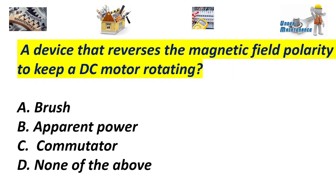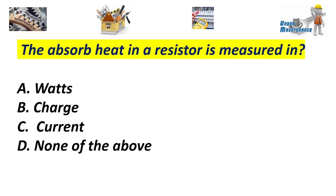A device that reverses the magnetic field polarity to keep a DC motor rotating: A. Brass. B. Apparent power. C. Commutator. D. None of the above. Answer: C. Commutator. The absorbed heat in a resistor is measured in: A. Watts. B. Charge. C. Current. D. None of the above. Answer: A. Watts.